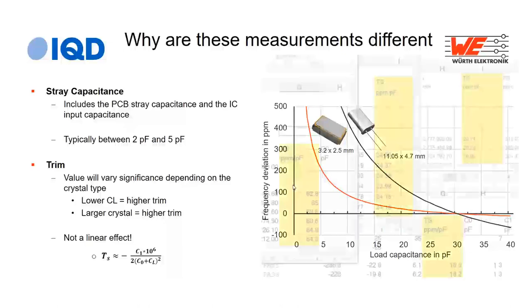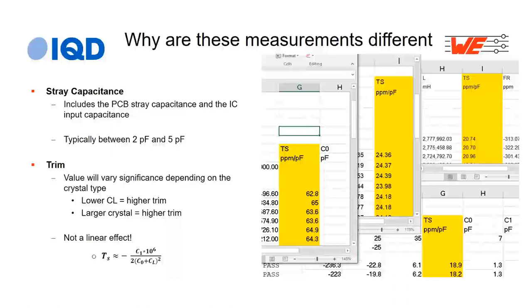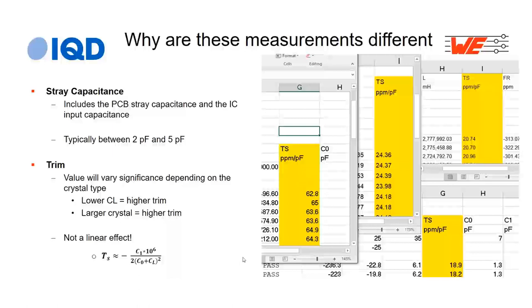How serious can this get? Looking at five sample crystal datasets, trim sensitivity values of around 20 ppm/pF are common, and one example showed 60 ppm/pF. That means being just 1 pF off in your load capacitance could shift your frequency by 60 ppm — making accurate load capacitance absolutely critical if you need frequency accuracy.